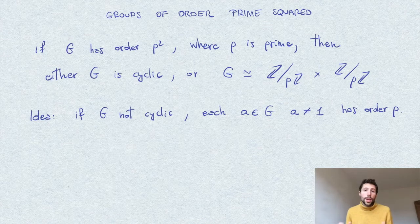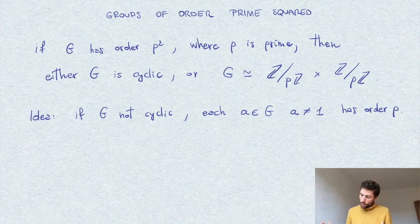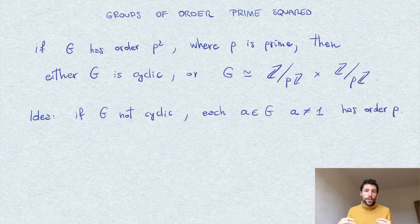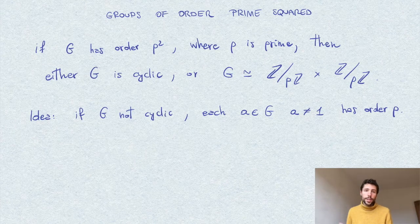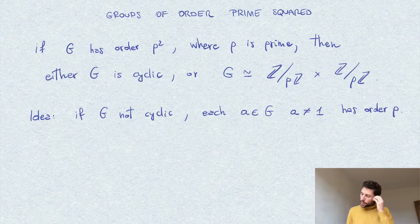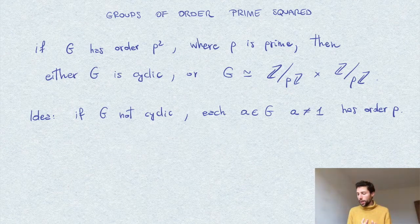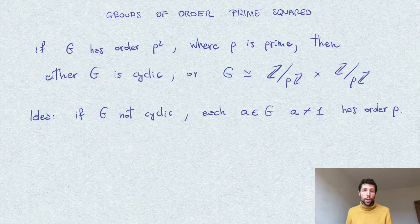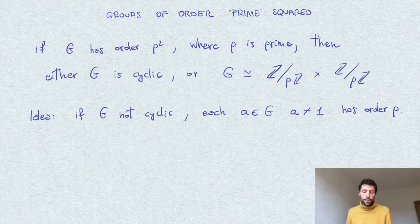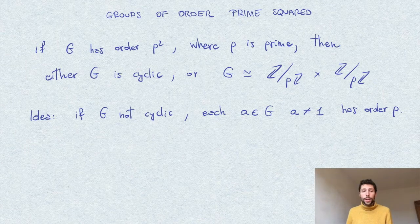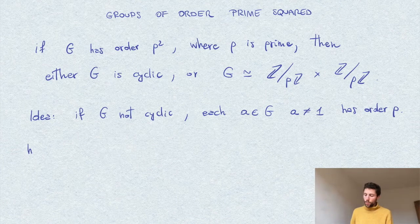So what we have is that we can pick a bunch of these elements, and they will generate cyclic groups of order p. In other words, our group G will split into a collection of certain number of groups of order p. So the question is, how many of these subgroups do we have?